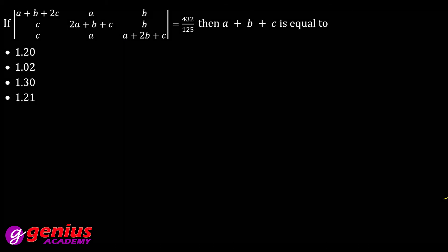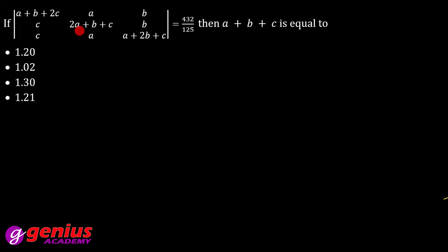Next: ek determinant diya hai, aur bataana hai ki a + b + c = ? Pehle determinant property lagate hain. C1 pe operation lagate hain — C1 + C2 + C3 — toh first column mein 2a, 2b, aur 2c aa raha hai.